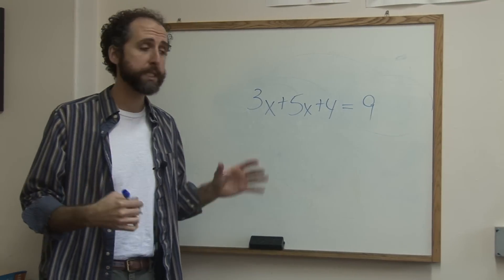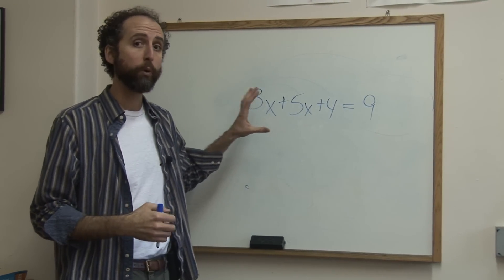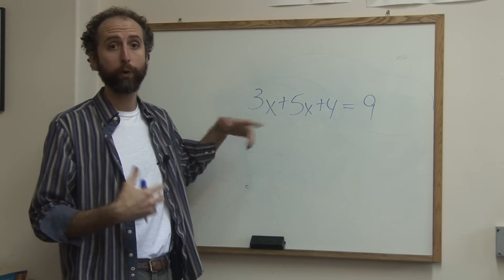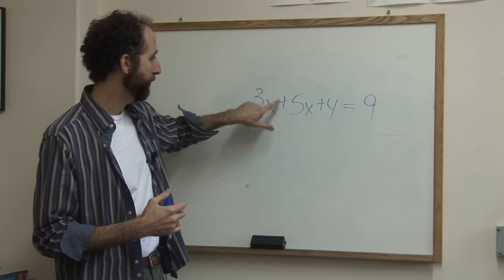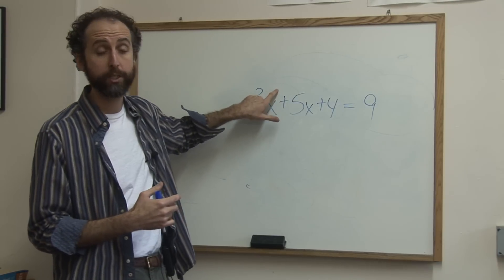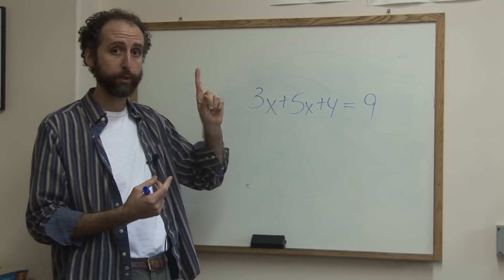So first of all, when we say solve a polynomial equation, what we really mean is solve for x. What is the value of x? And there's going to be one number that x is. By the way, there's no number here for x, no x exponent. x is to the first, and there's going to be one answer.